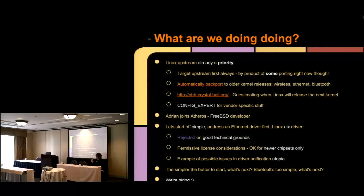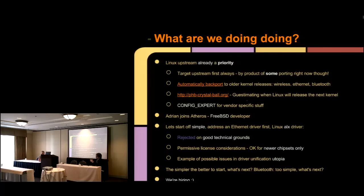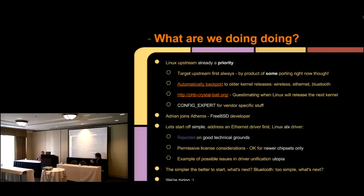So we start off simple. It's a big problem to try to address killing a proprietary driver. So let's simplify it, just like with the intellectual property issues, and start by addressing Ethernet, which is the simplest driver we can likely work on. We're looking at this with the ALX driver. This was submitted but rejected by David Miller, but we address our concerns about using a permissive license for our new chipsets and he seems reasonably okay with that as a strategy. We're going to work on this and then try to address a BSD strategy as well. We're hiring too.